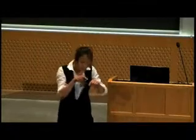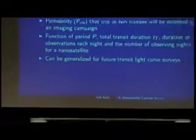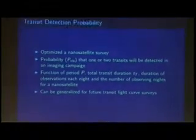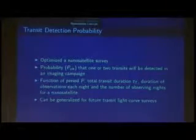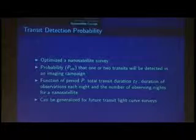We can set up a large network of nanosatellites with the necessary precision to observe fractional changes in light curves to find Earth analogs. Through this nanosatellite concept, we tried to optimize the survey by developing a probability distribution based on certain parameters, like how many nights we observe and how many hours per observing night. We developed a probability distribution that can be generated for future light curve transit surveys.